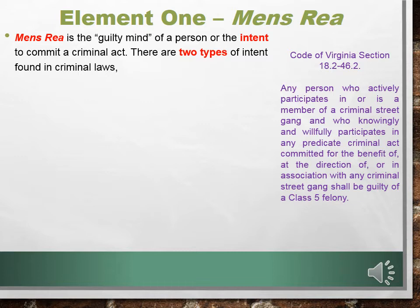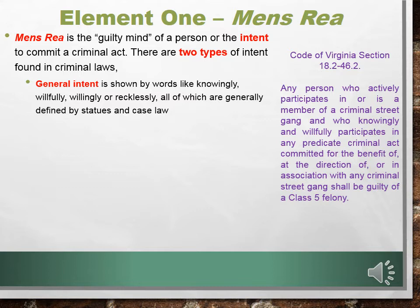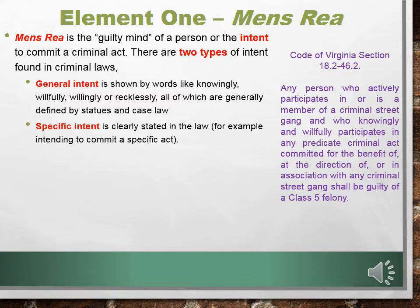There are two types of intent in criminal law. General intent is shown by words like knowingly, willfully, willingly, or recklessly — all generally defined by statute and case law. Specific intent is clearly stated in the law; for example, intending to commit a specific act. Looking at our statute, we see the words 'knowingly and willfully,' so this is a general intent crime.